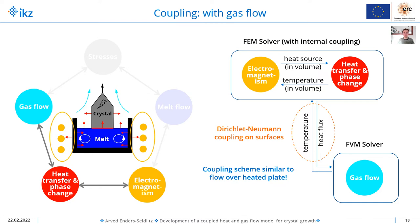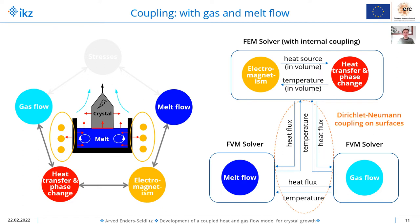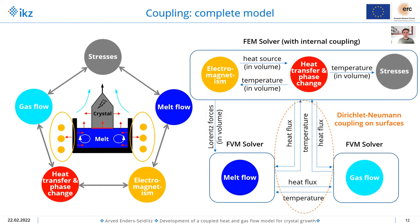But first let's look at the coupling. It's more complicated when we have the second finite volume solver for the melt flow. Then we have additional coupling to the heat transfer model with again heat fluxes and temperatures, but also in between — so still Dirichlet-Neumann coupling on surfaces but between more participants. Furthermore, we have an influence of the electromagnetism on the flow due to Lorentz forces, and this would be an additional one-directional volume coupling. In the most complicated scenario when we also include the stress model, we implement this in our FEM solver with an internal coupling, and there would be a one-directional coupling where we feed temperatures in the volume into the stress model.